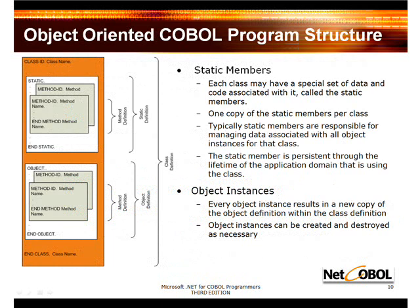Now let's take a look at how this would be implemented in a COBOL program. The rules for static and instance are really pretty simple and straightforward. Characteristics for static members are as follows: each class may have a special set of data and code associated with the static members. One copy of the static members is associated per class. Typically, a static member is responsible for managing the data associated with all of the object instances for that class. The static member is persistent throughout the entire lifetime of an application domain that uses a given class.